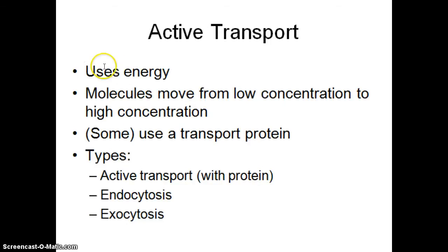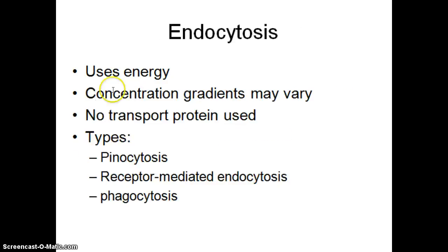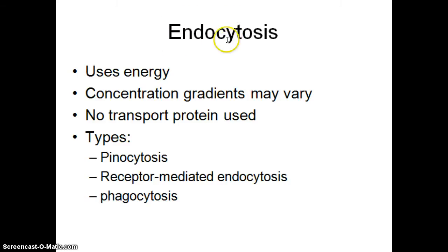Getting back to active transport — active transport uses energy, the molecules move from low concentration to high, and sometimes we need a transport protein. The types of active transport are simple active transport, endocytosis, and exocytosis. Endocytosis uses energy, concentration gradients can vary, we definitely do not use a transport protein, and there are three different types — ways that we take things inside the cell. Endo means inside, cyto means cell, so endocytosis means bringing something inside the cell.